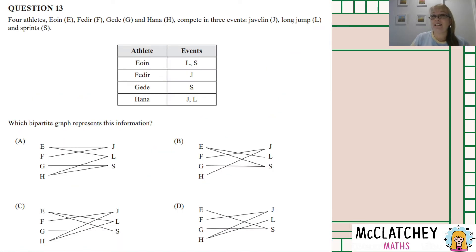Final question on decision mathematics on the multiple choice section. I do apologize if I pronounce these names incorrectly. Four athletes, Yuen, Fadiya, Ghida and Hannah compete in three events. The javelin, the long jump and the sprints. And we're given a table to tell us which athlete does what event. So what we're going to do is we're going to go through A then B then C then D and see if we can get a match from the bipartite graph to the table.